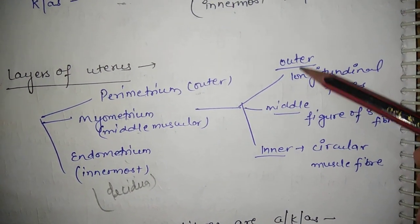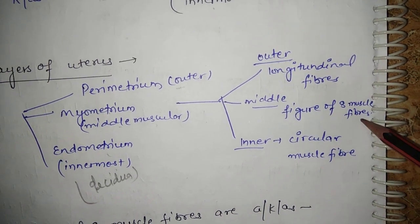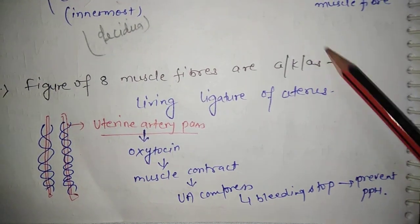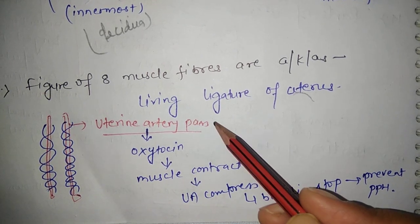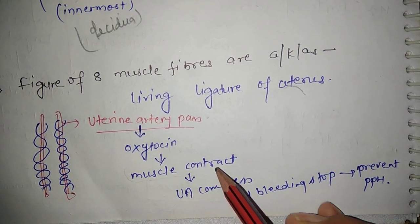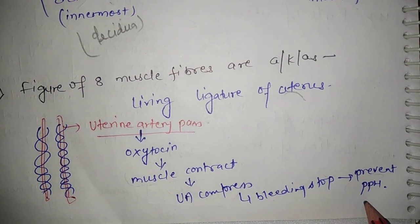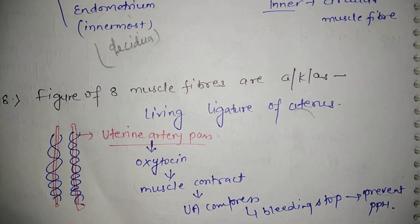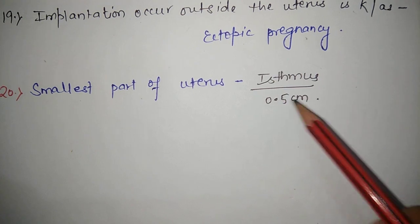Myometrium has three layers: outer, middle, and inner. The outer layer has longitudinal muscle fibers, the middle layer contains figure-of-8 muscle fibers, and the inner layer contains circular muscle fibers. Figure-of-8 muscle fibers are also known as the 'living ligature of the uterus.' The uterine artery passes through them and releases oxytocin, which contracts the muscle, compresses the uterine artery, stops bleeding, and prevents postpartum hemorrhage. Implantation occurring outside the uterus is known as ectopic pregnancy. The smallest part of the uterus is the isthmus at 0.5 cm.